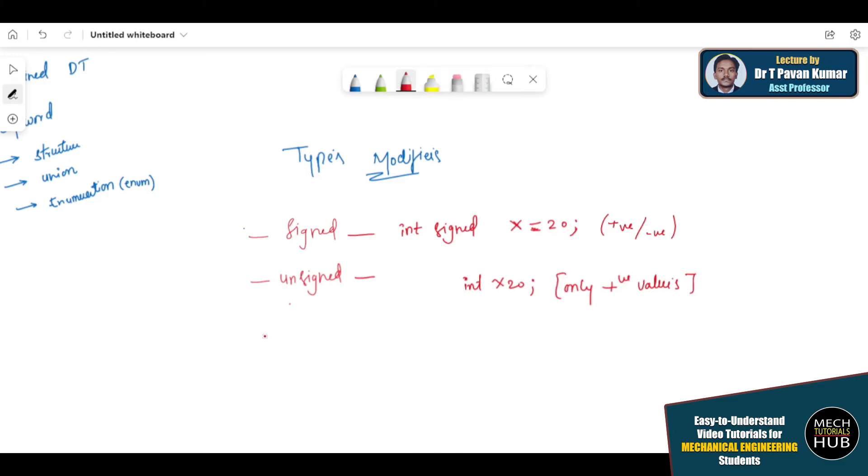You have only positive values. This is called unsigned. I am showing you the representation of a modifier. When it is signed, how we represent. When it is unsigned, how we represent. In the same way, one of the another modifier is short. When I write the actual program, you will understand better. Short and long. What is short? What is long? All these things we are going to discuss.